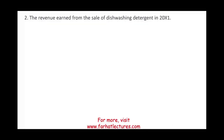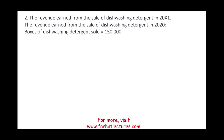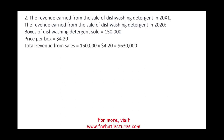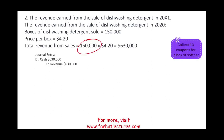Next, we compute the revenue earned from the sale of the dishwashing detergent. We sold 150,000 units at $4.20 each, so total sales is $630,000. The entry is debit cash and credit sales — we'll ignore cost of goods sold here. With those 150,000 sales come the coupons, because customers will now collect them, so there are 150,000 outstanding coupons.